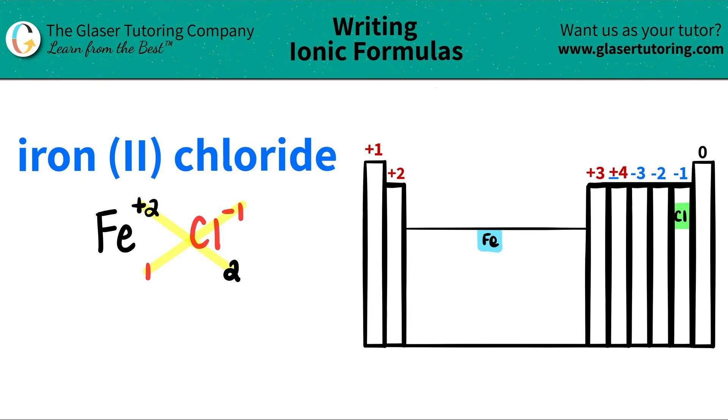Now, let's write our formula. So I have iron Fe. I only need one of these, so I don't have to write this one here. But then when I say that I have chlorine, I have to have, you know, I have two of them. So I have to write this 2. And then I'm done. So iron(II) chloride is just FeCl2.